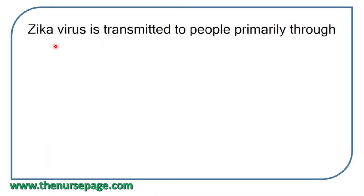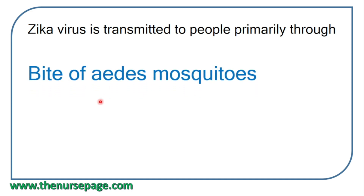Next question: Zika virus is transmitted to people primarily through the bite of Aedes mosquitoes, commonly Aedes aegypti. Aedes albopictus also causes Zika virus transmission, but Aedes aegypti is the main vector.